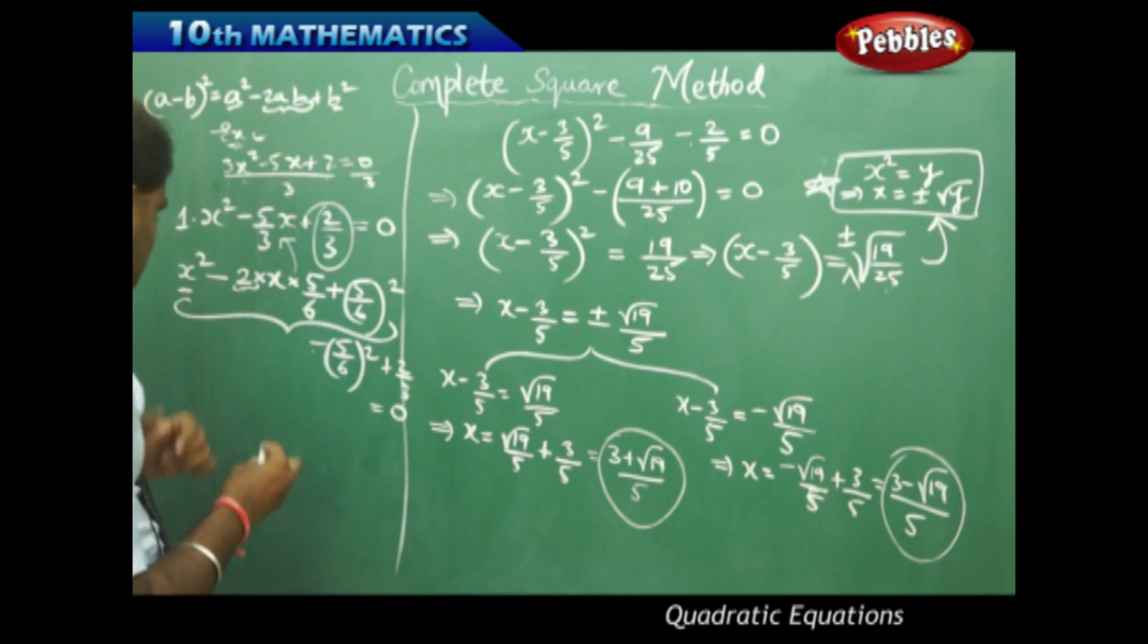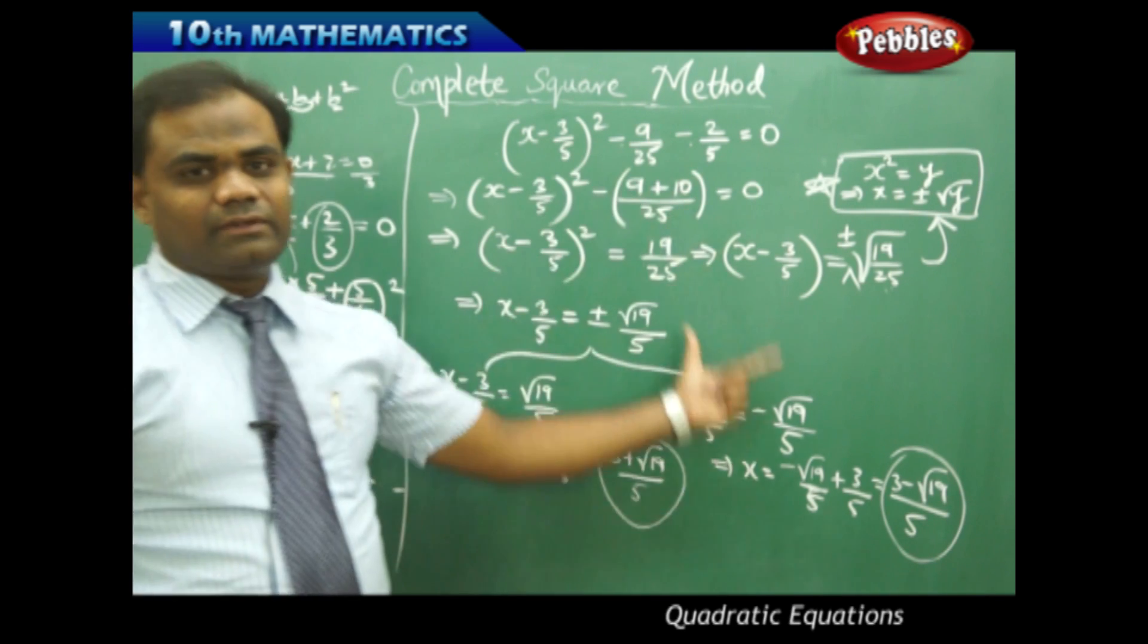In this case this reduces to (x - 5/6)² and then this reduces to -25/36 + 2/3 = 0, and thus we proceed as we have done here.